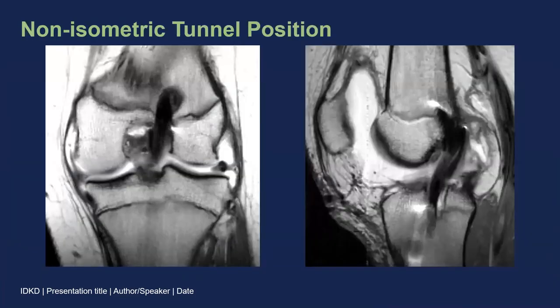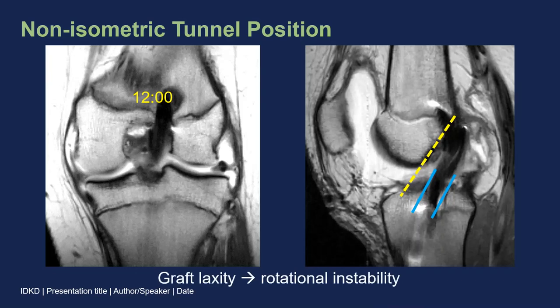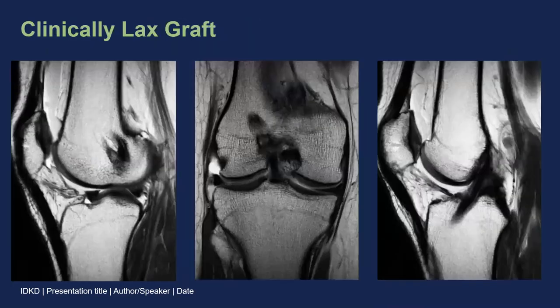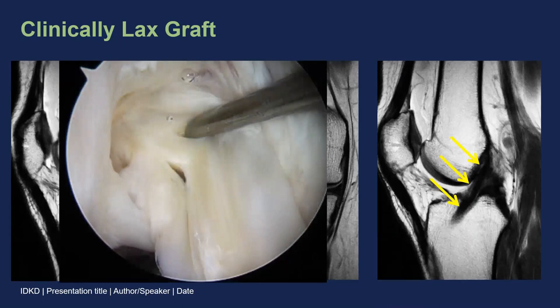Non-isometric tunnel position can be a problem for a few reasons. In this example, the femoral tunnel is at the 12 o'clock position, and the tibial tunnel is well posterior to Blumensatz line. That combination means the graft will be relatively vertically oriented, which can lead to graft laxity or even rotational instability. In another patient, the femoral tunnel is too far anterior and superior, and clinically this patient had a lax graft, even though it looks perfectly normal on MRI. At arthroscopy, that graft was lax and incompetent and needed to be revised — so we can't always determine graft laxity on MRI, but we can accurately assess tunnel position.